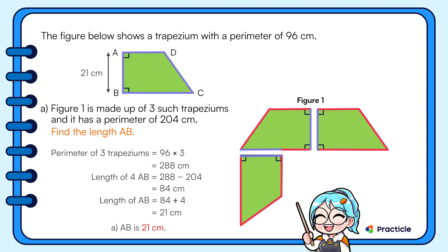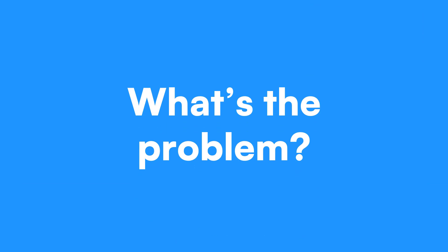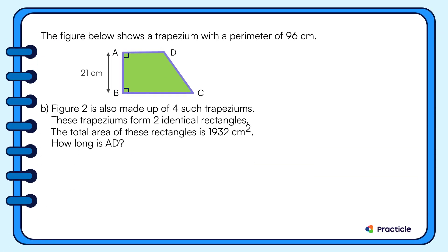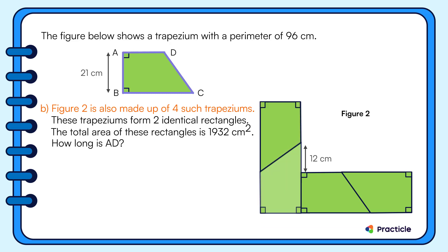So far so good? Next, let's look at part B of the problem. In part B, we are given that figure 2 is also made up of 4 such trapeziums. And guess what? These trapeziums form 2 identical rectangles. The total area of these rectangles is 1932 square centimeters. And it looks like we need to find the length of AD.